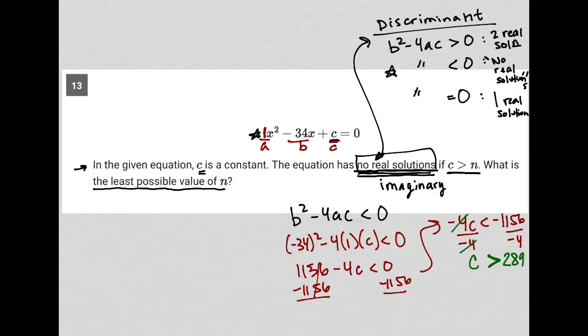So c has to be greater than 289 in order for there to be no real solutions. So the question says the equation has no real solutions if c is greater than n. And then asks me, what is the least possible value of n? Well, n has to equal 289. Like we're just matching these two things together. c is greater than 289. The question says c is greater than n. So of course, these two things go together. The smallest thing n can equal is 289. So that's our answer, 289.